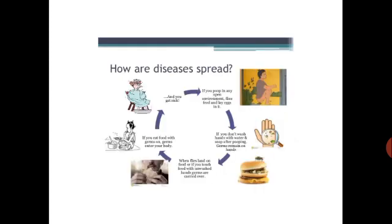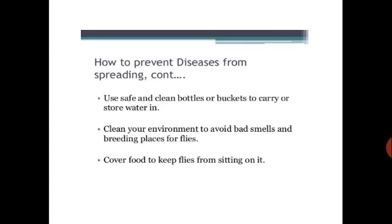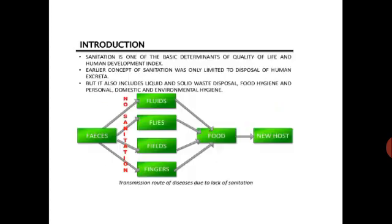This diagram explains how exactly diseases spread in the environment due to poor sanitation. To prevent disease from spreading, we must use clean toilets, wash our hands, use safe and clean bottles and buckets to store and carry water, and cover food with proper utensils. As shown in the diagram, disease transmits through fluids, flies, fields, and fingers — the four Fs.